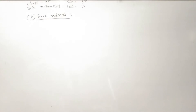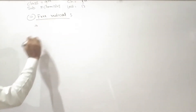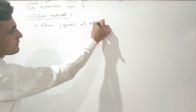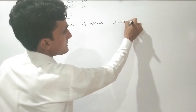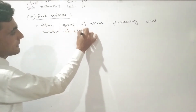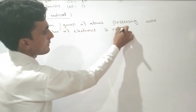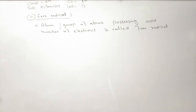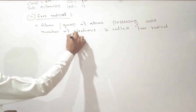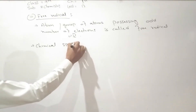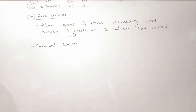What is free radical? An atom or group of atoms possessing an odd number of electrons is called free radical. So we have free radical defined as an atom or group of atoms possessing an odd number of electrons.